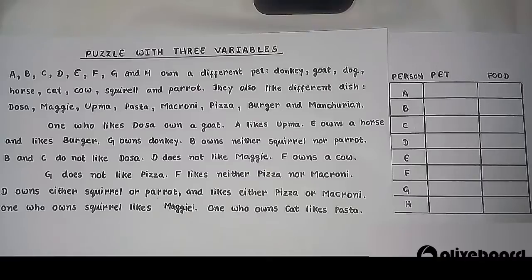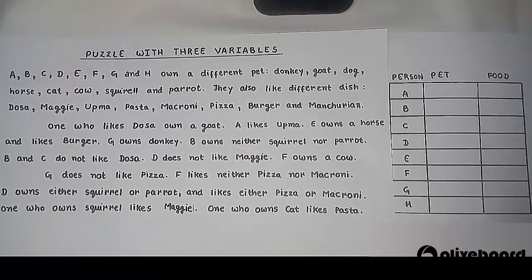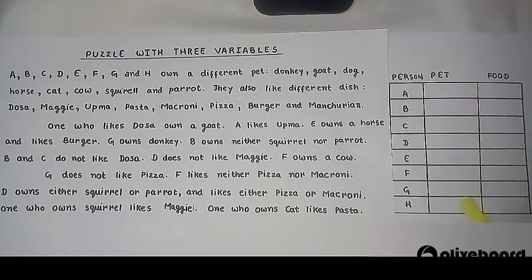A, B, C, D, E, F, G, H own different pets: donkey, goat, dog, horse, cat, cow, squirrel, and parrot. They also like different dishes: Dosa, Maggi, Upma, Pasta, Macaroni, Pizza, Burger, and Manchurian. So we have 8 people with 8 different pets and 8 different dishes. As soon as you see 8 people, quickly write A through H. Then make one column for 8 pets and another column for 8 different dishes.